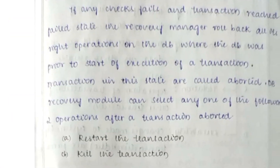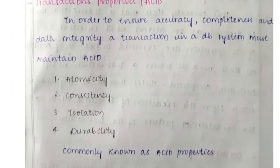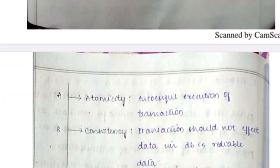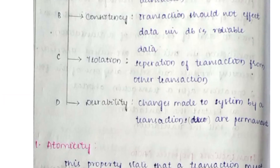The most important concept in Unit 4 is ACID properties: Atomicity, Consistency, Isolation, and Durability. Atomicity means the transaction must be treated as an atomic unit — either all its operations are executed, or none of them are. The system must check whether the transaction was executed or not.